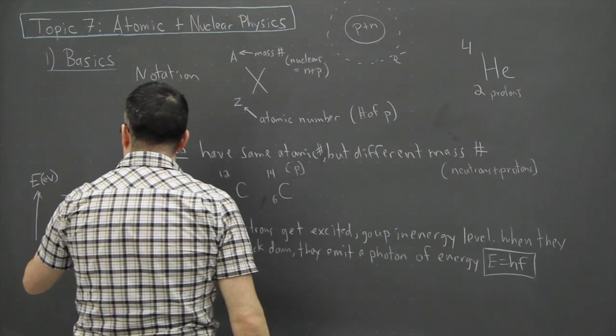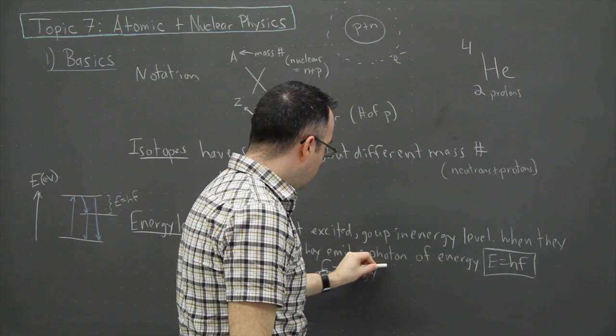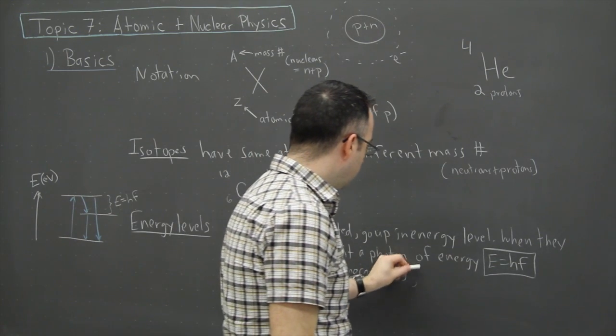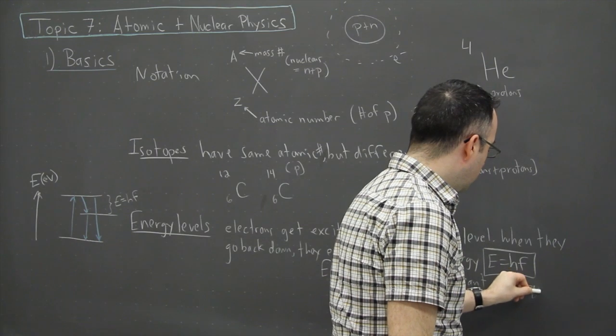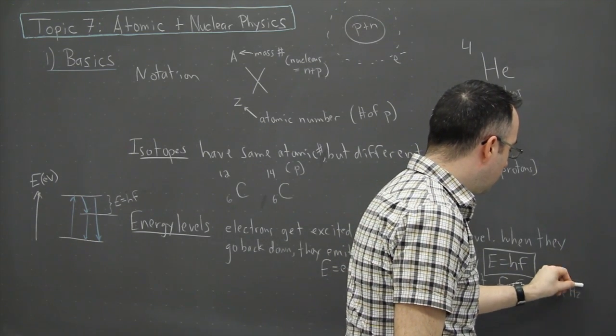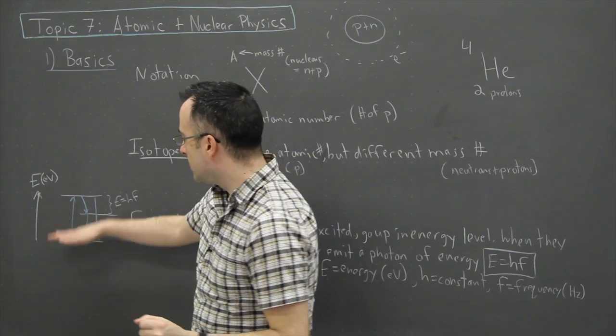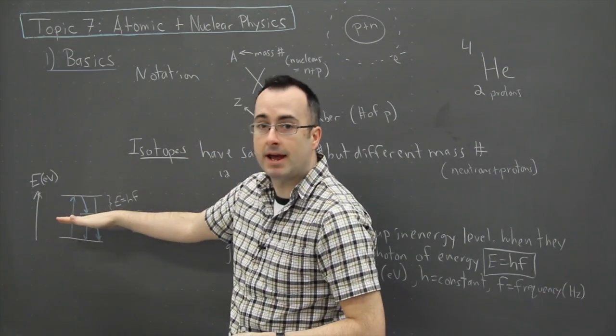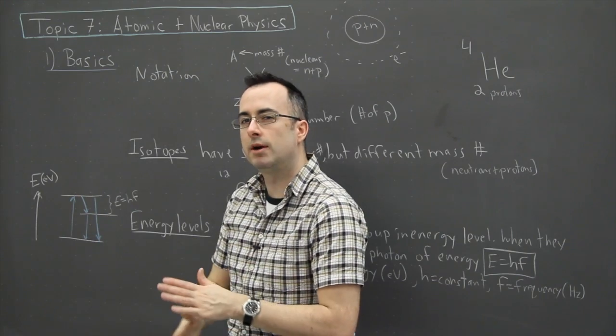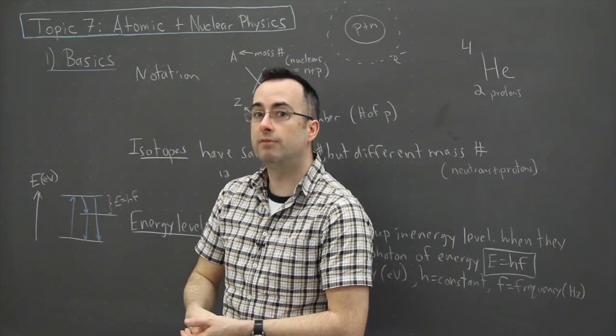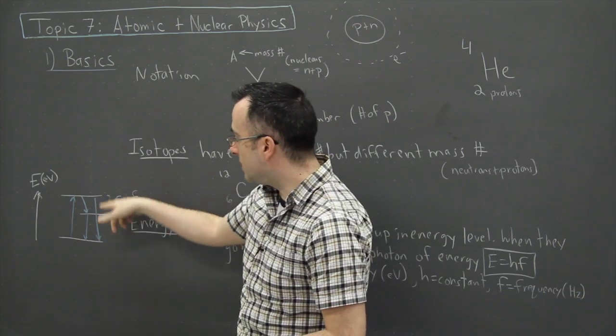So maybe I better define this. So E equals the energy, and that's measured in electron volts. We have h, which is just some constant that you can look up, and f equals the frequency of light. And that's going to be in hertz, which means you can actually convert from frequency of light to color. So what this really tells you is that if you've got an energy transition, you've got electrons getting excited and then dropping down. Let's say they kick out a photon of energy E equals hf, which means, and remember f tells you about the color. Remember the wave equation, which is v equals f lambda—that was from Topic 4.